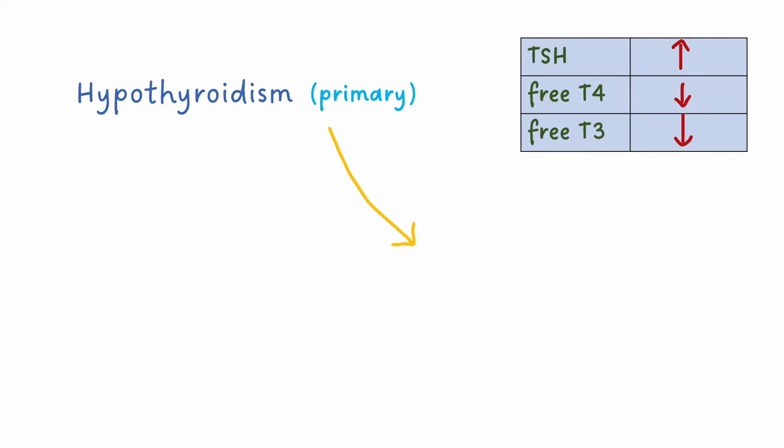This can be caused by Hashimoto's disease, which is another autoimmune condition that damages the thyroid. An additional blood test that can help identify Hashimoto's is anti-TPO, but it isn't a specific test and can also be present in Graves' disease.